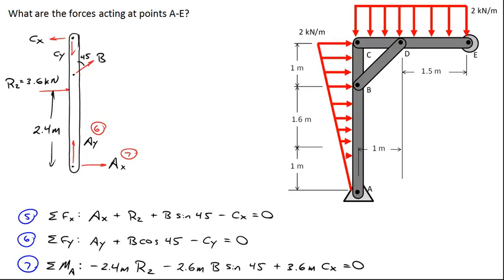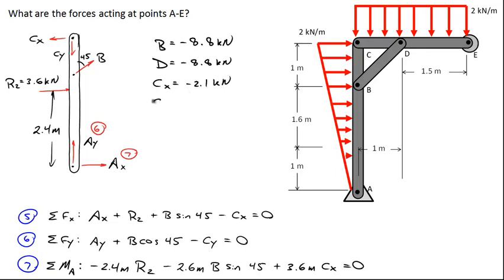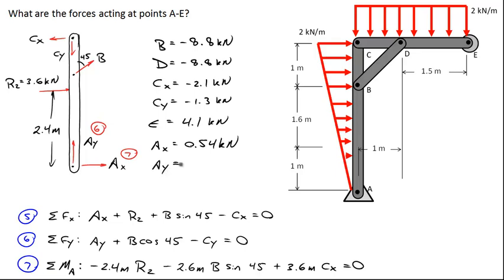Solving the system of seven equations and seven unknowns: B equals negative 8.8 kilonewtons, indicating member BD is under compression. B and D are equivalent. CX equals negative 2.1 kilonewtons, CY equals negative 1.3 kilonewtons, E equals positive 4.1 kilonewtons, AX equals 0.54 kilonewtons, and AY equals 5 kilonewtons.